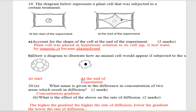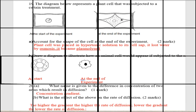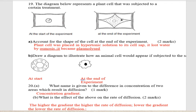Remember, in biology explanations, terminologies will earn you marks — don't use pure English; use correct biological terms to explain yourself. Part b: draw a diagram to illustrate how an animal cell would appear if subjected to the same treatment. We have drawn that cell here — at the start it is big, but at the end of the experiment it will appear shrunken, as we have drawn.